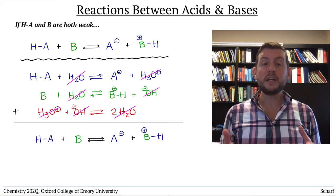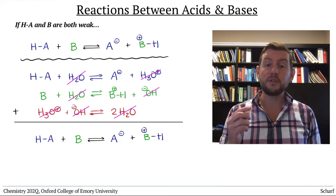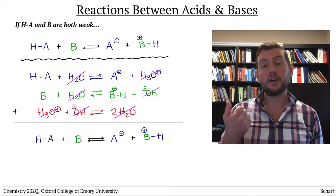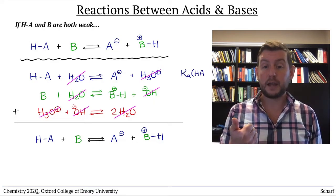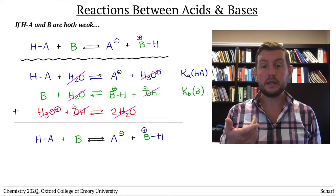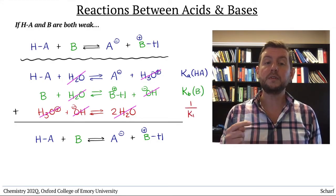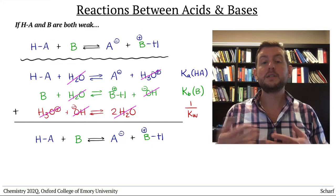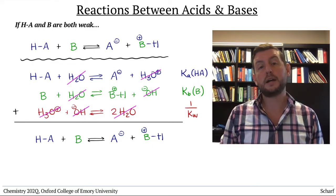We know the equilibrium constants for each of the first three reactions. They're Ka for HA, Kb for B, and 1 over Kw, since we reversed the autoionization of water.